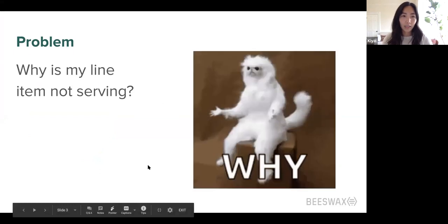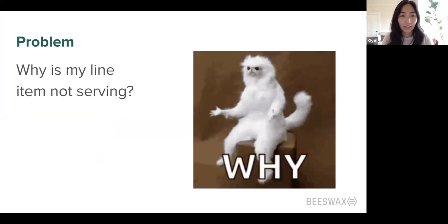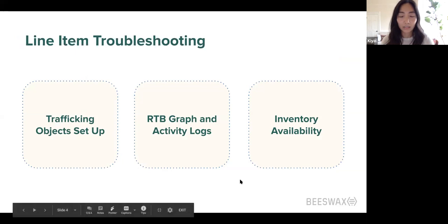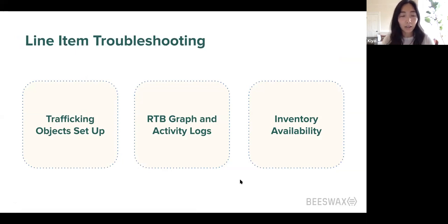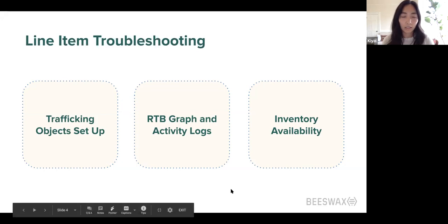The topic we're covering today is this problem of why is my line item not serving. This is an incredibly common bump in the road that our customers and their teams face. When this happens, it's really nice to have some next steps — an idea of what can I do to look into this and start the troubleshooting process. I've thought of three buckets: trafficking objects setup, the real-time bidding graph and activity logs, and inventory availability.